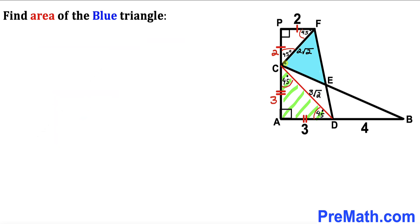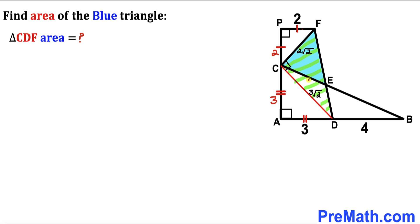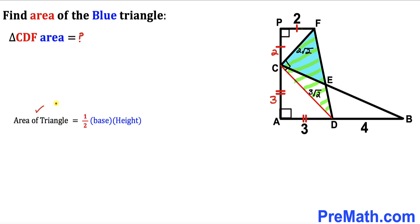Now let's make an observation: this straight angle is 180 degrees. We know this angle is 45 degrees, this angle is 45 degrees, and this angle is 45 degrees. So angle FCD turns out to be 90 degrees. Now we are going to calculate the area of triangle CDF. Recalling the area formula: area equals one half times base times height. In triangle CDF, the base is 3 times square root of 2 and the height is 2 times square root of 2, since this angle is 90 degrees.